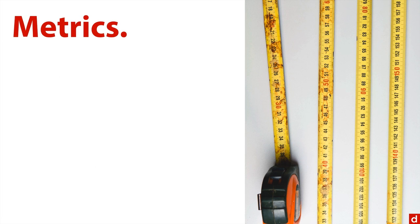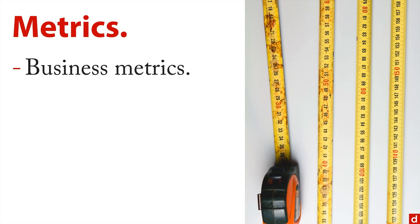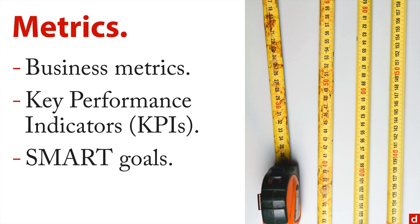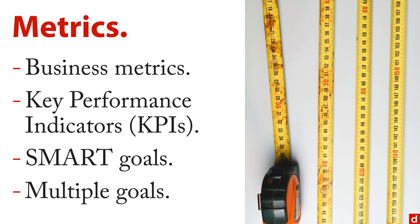Next are specific metrics, or ways of measuring. There are a few different categories here: there are business metrics, there are key performance indicators or KPIs, there are SMART goals — that's an acronym — and there's also the issue of having multiple goals. I'll talk about each of those for just a second.